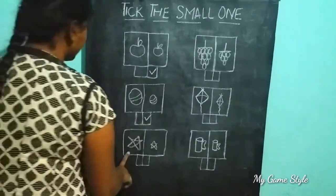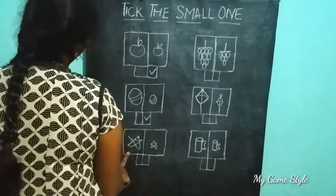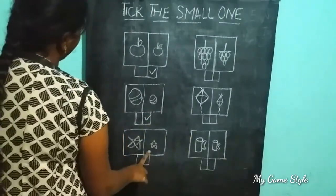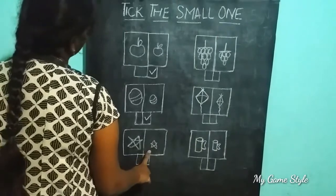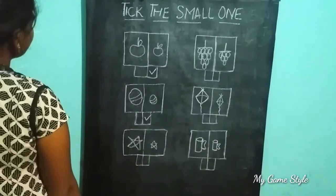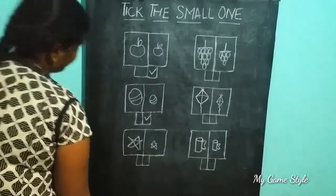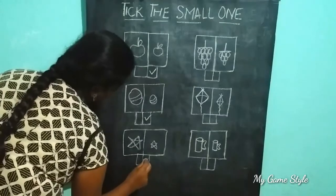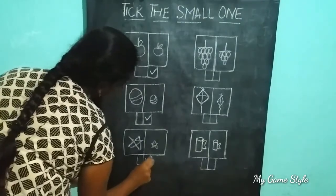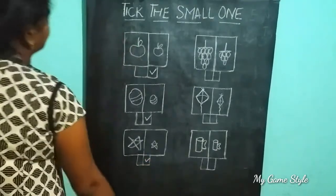This is a big star. This is a small star. So we need to tick the small one. This is a small one.